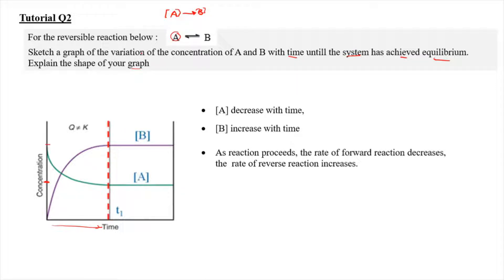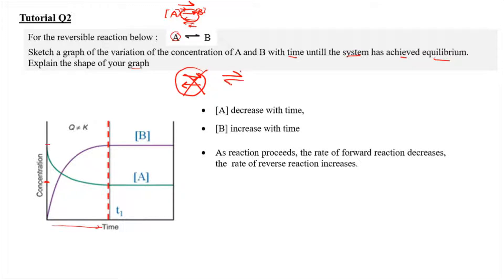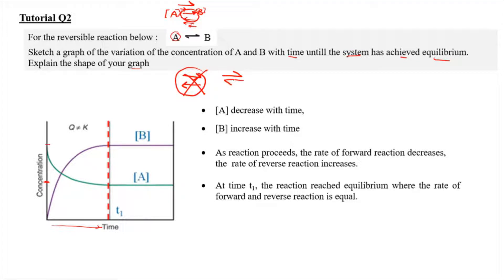At first, when the reaction proceeds, the rate of the forward reaction will get smaller and smaller. Meanwhile for B, at first it will be smaller and then it will get bigger and bigger. At a certain point, the rate of the forward reaction and the rate of the reverse reaction will be the same, equated by using the reversible arrow, meaning the rate of the forward reaction equals the rate of the reverse reaction.